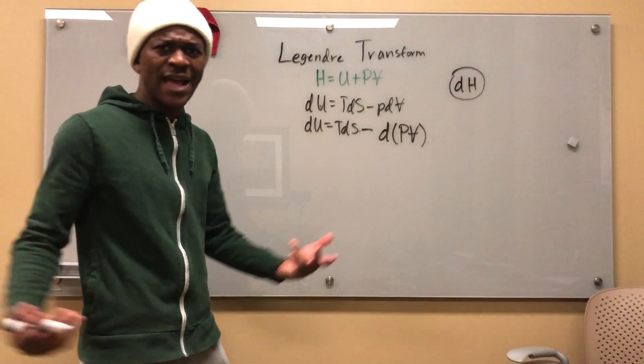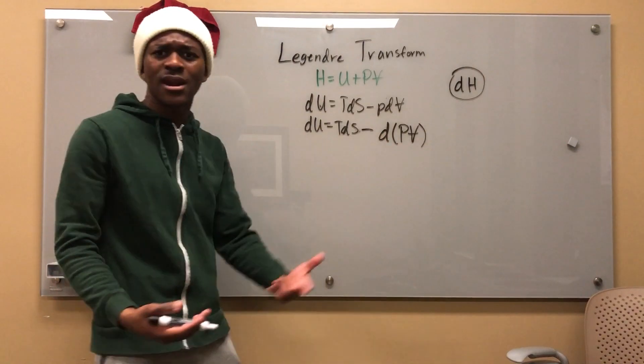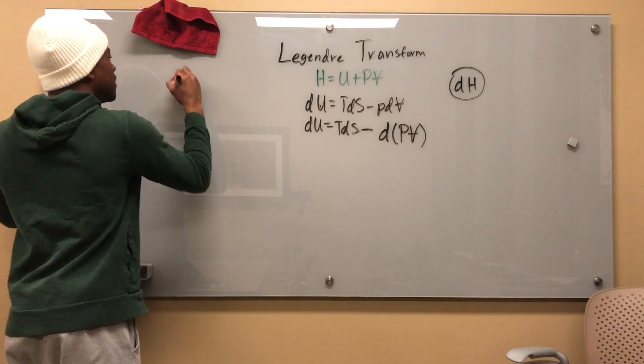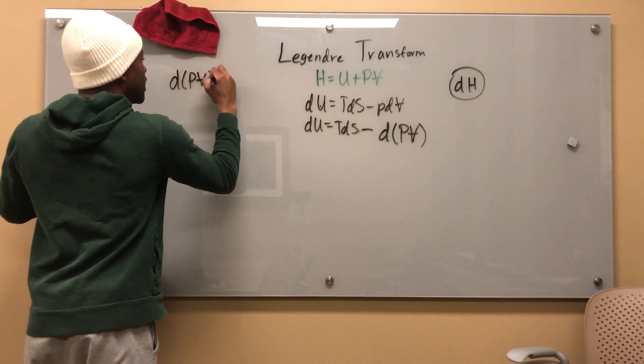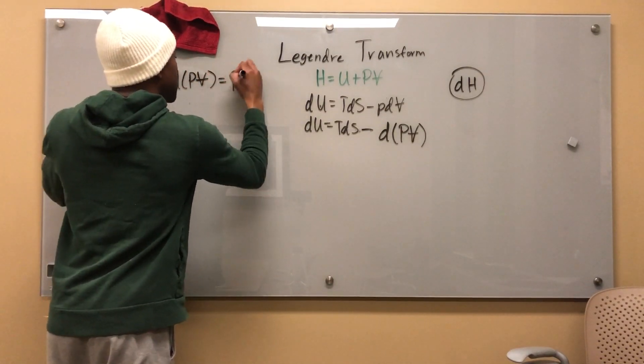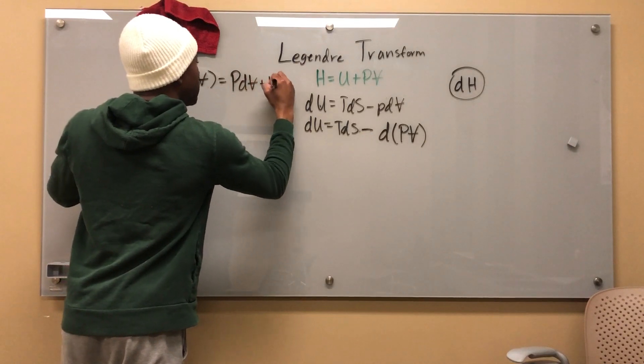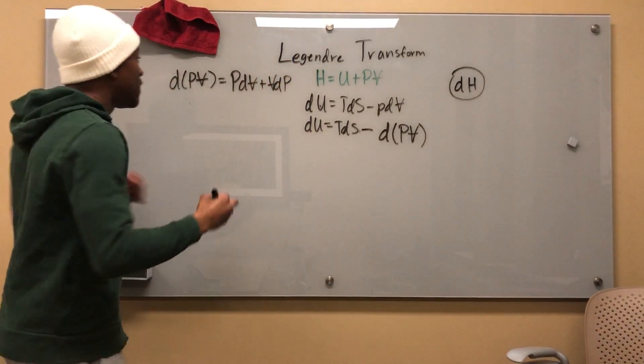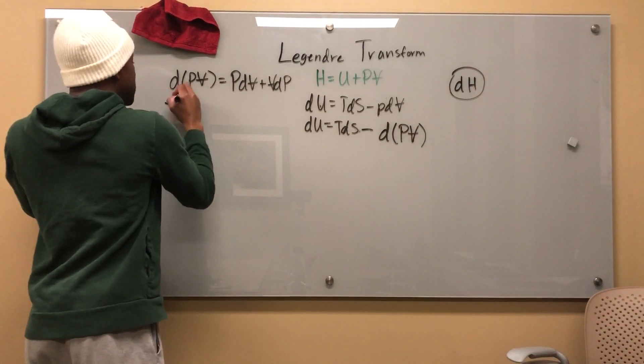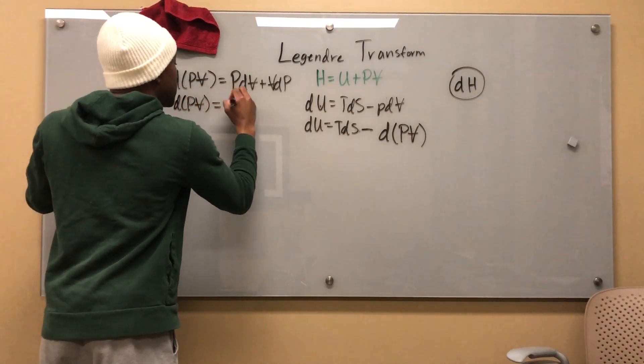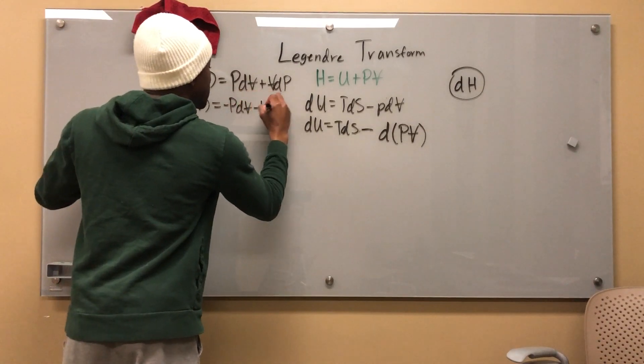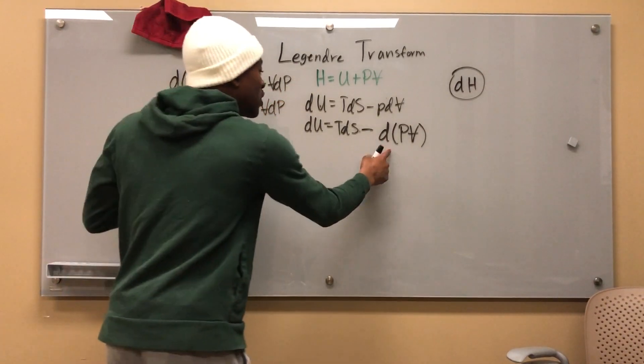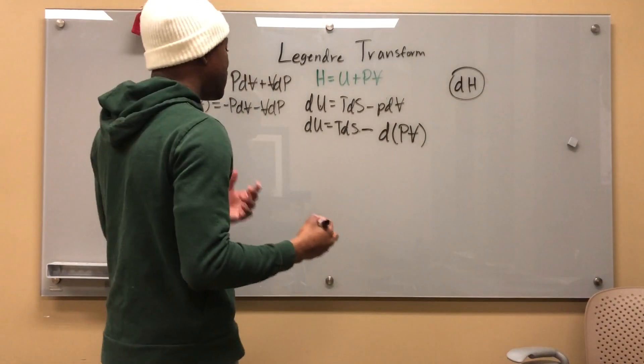I'm going to go ahead and take the product rule of this. But I can't just subtract this and not have to add something to keep this equation constant. So I know that d(PV) is equal to PdV plus VdP, right? That being said, this negative d(PV) will be equal to negative PdV minus VdP, right? Cool. So because this is equal to negative PdV minus VdP, I'm going to go ahead and say that.